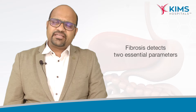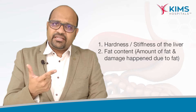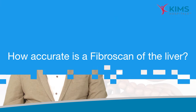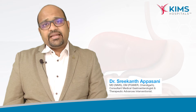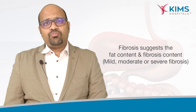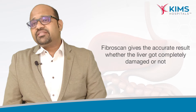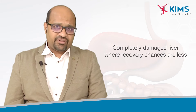Fibroscan detects two essential parameters. First is the hardness — the stiffness — how hard the liver has become. Second is the fat content: the amount of fat and the damage it is causing to the liver in the form of a CAP score. It also tells us whether we have mild, moderate, or severe fibrosis — whether the liver has become completely damaged and cirrhotic, where recovery is not feasible, or whether the damage is still at an early stage where treatment options can reverse the process.